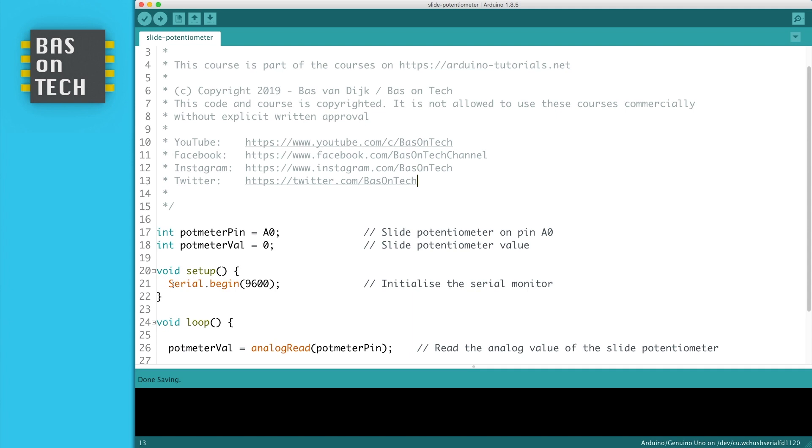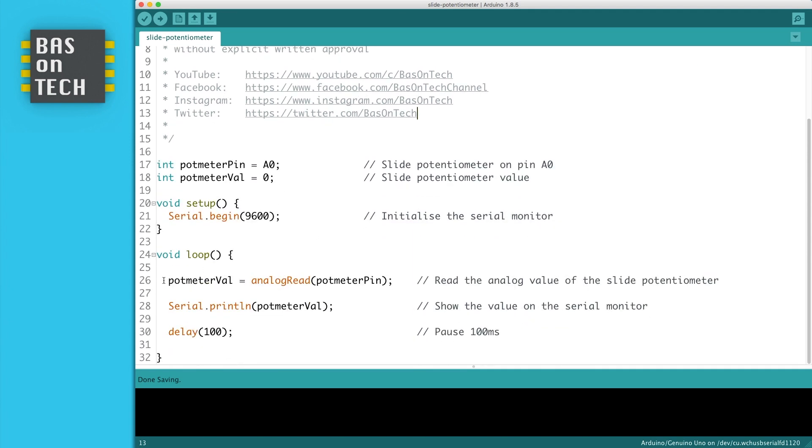The setup is only initializing the serial monitor and the loop only has three lines. We read out the potentiometer value by doing an analog read on the potentiometer pin to get its analog value. We write this value to the serial monitor and then pause for 100 milliseconds. I'm now going to upload this to my Arduino and show you what it looks like.